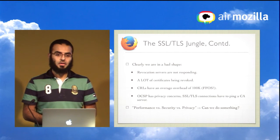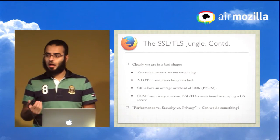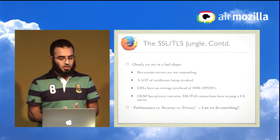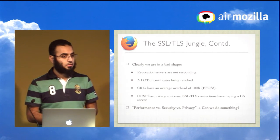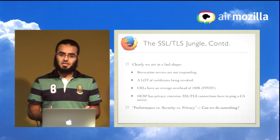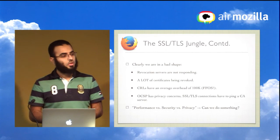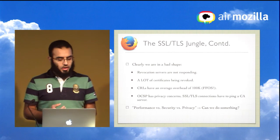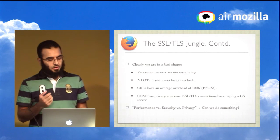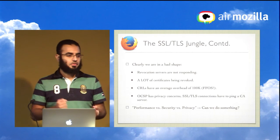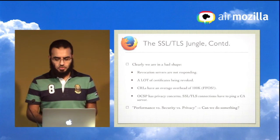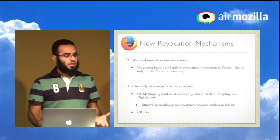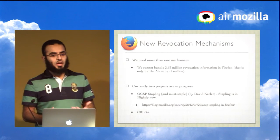Clearly we're in bad shape: revocation servers are not responding, many certificates have been revoked, CRLs carry ~100 KB overhead each, and OCSP has privacy concerns requiring a ping for every certificate. The trade-off is always performance versus security, or security versus privacy — so can we do something better?